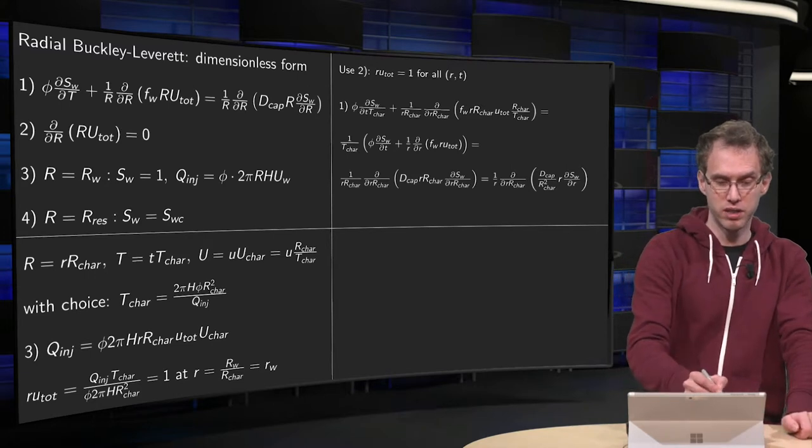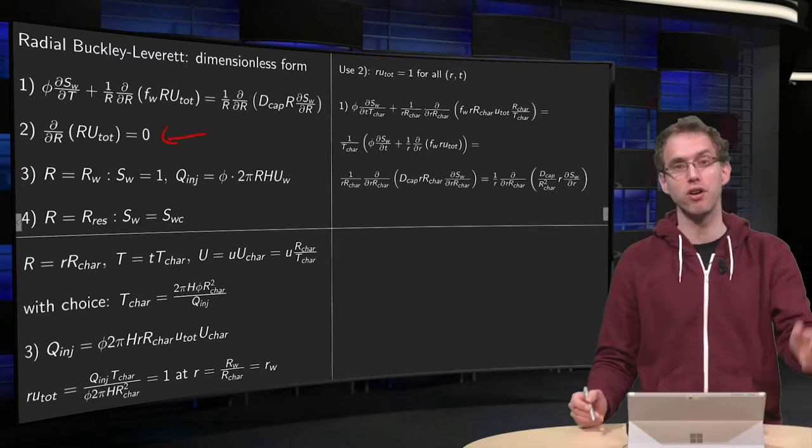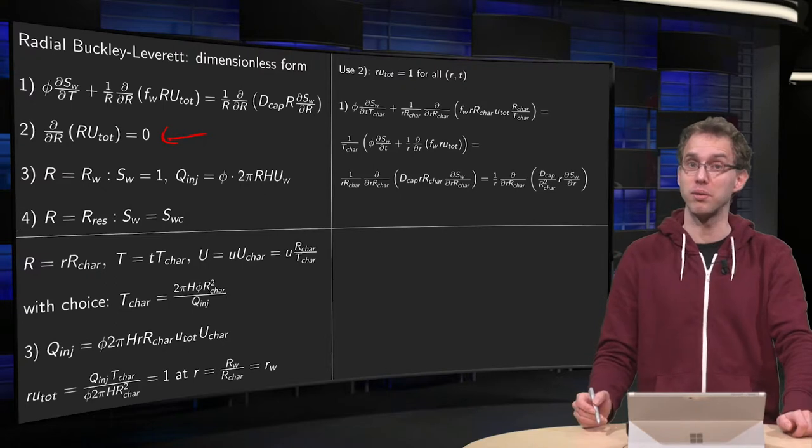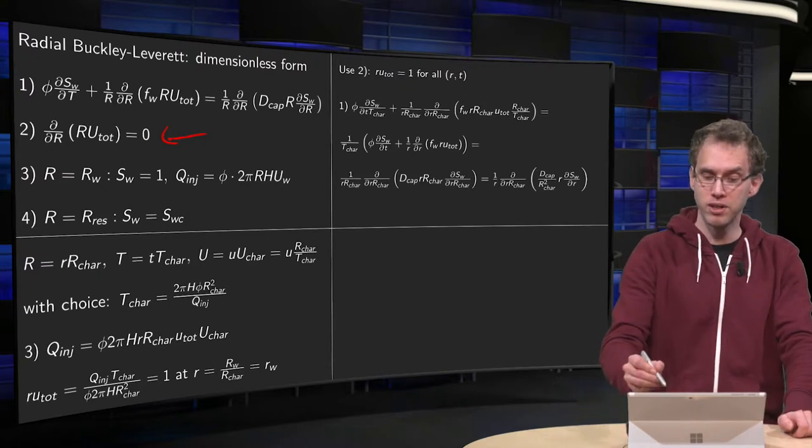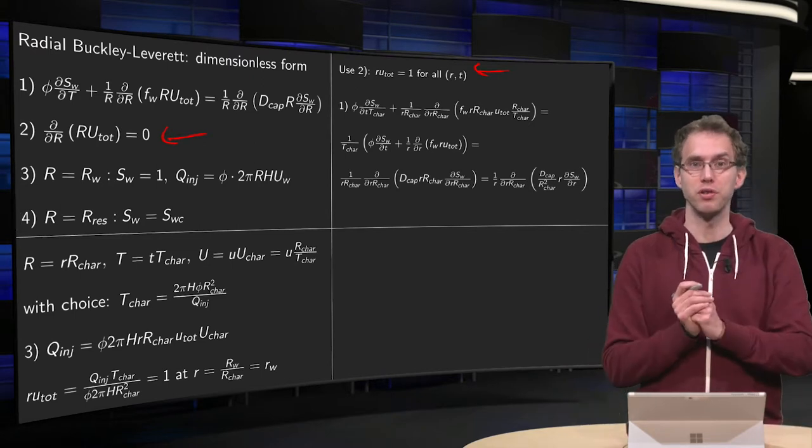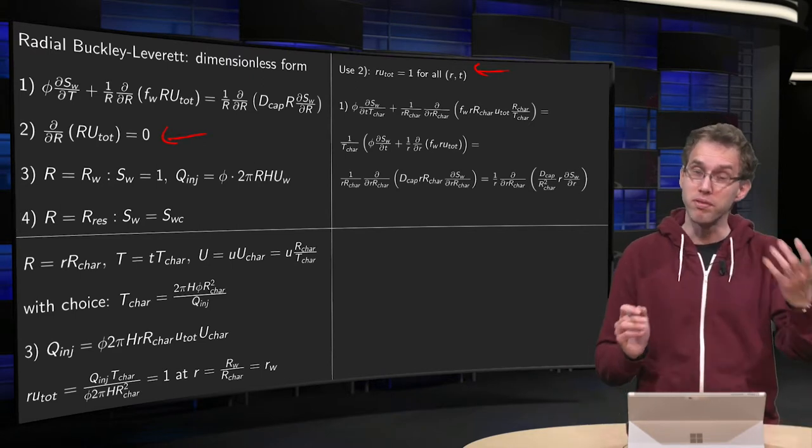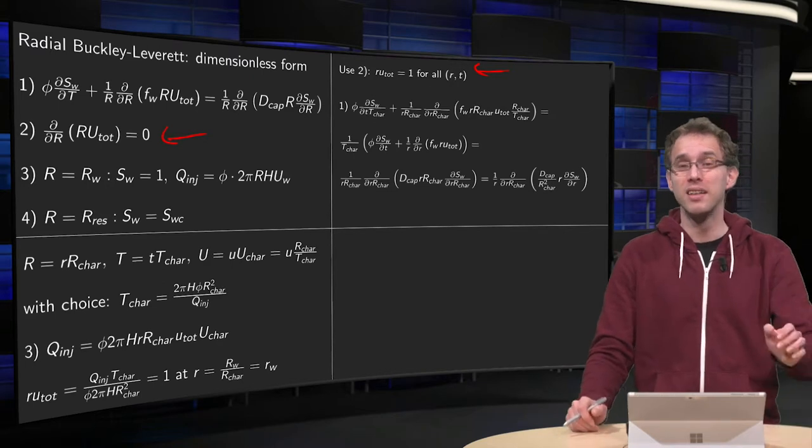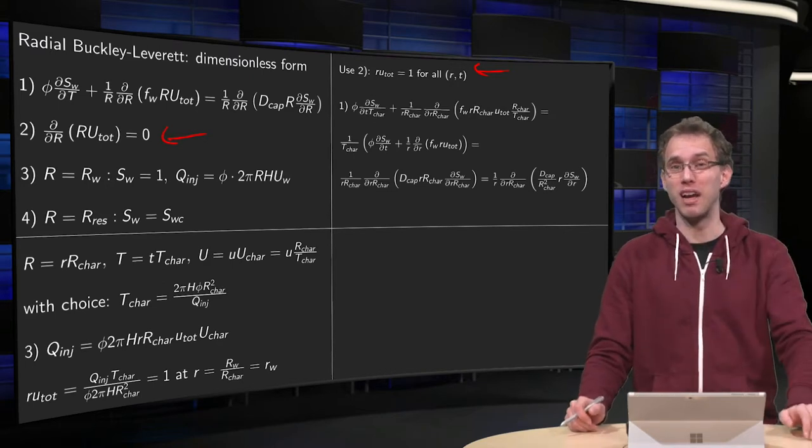Now, use this equation over here also in dimensionless form. It says that DDR of R times U-total is a constant. So, that means that R times U-total equals 1 for all R and T. So, this product equals 1. So, it will simplify the other equations as well. We will keep it for now.